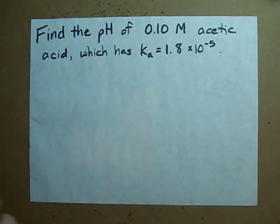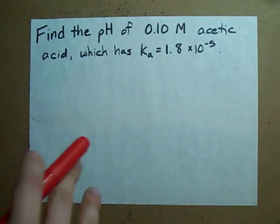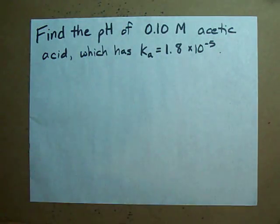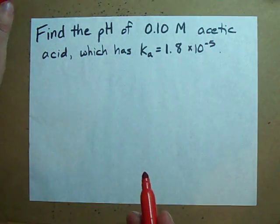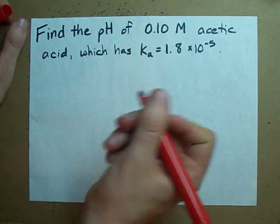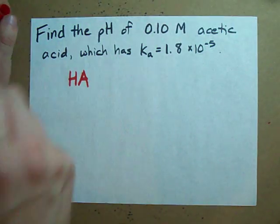The first thing that you're going to need is the dissociation equation. What happens when acetic acid dissolves in water? I know what the formula for acetic acid is, but even if I didn't, I could write something. I know it's an acid, so it has a proton.